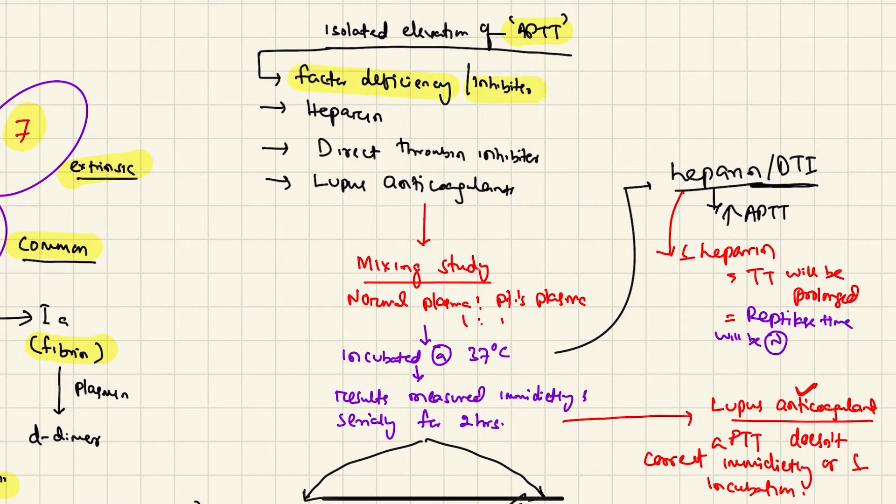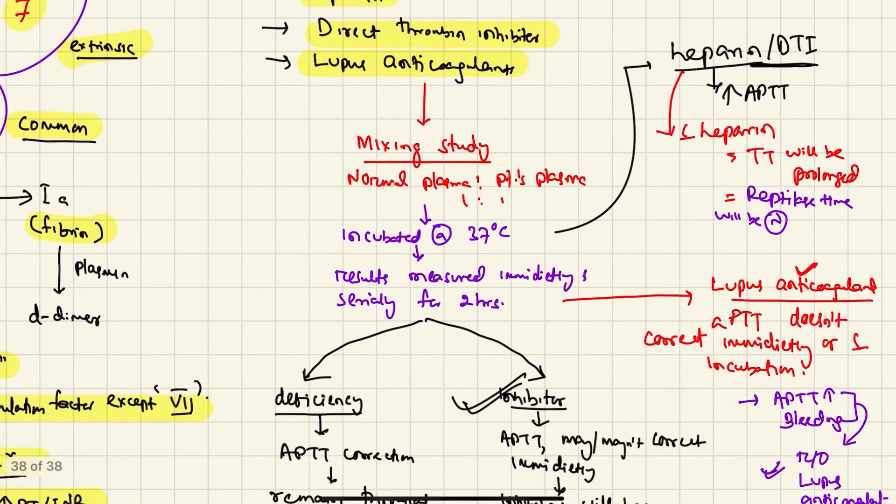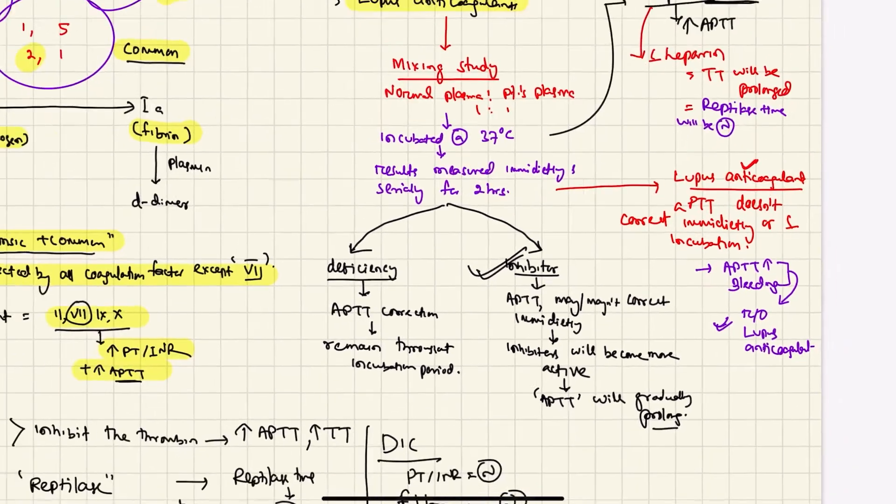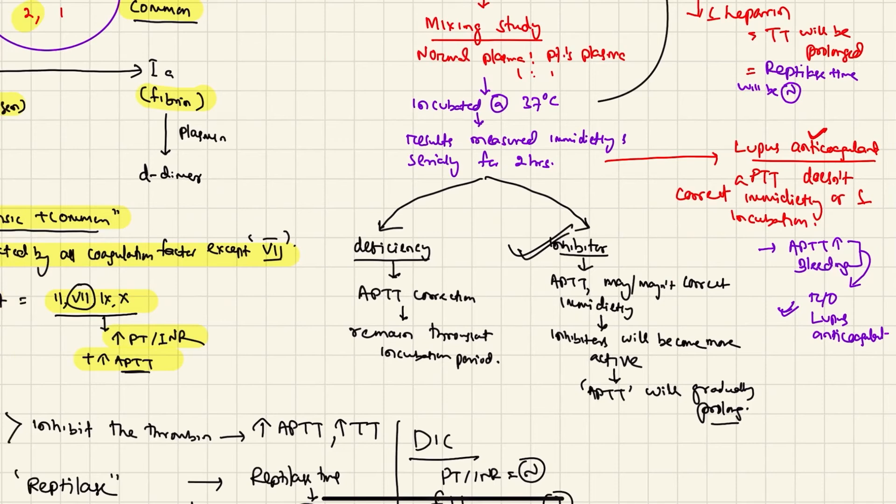So we can have four or five differential diagnoses: factor deficiency or inhibitor, heparin which can produce increase in aPTT, direct thrombin inhibitors, and lupus anticoagulants. So we will do a mixing study.